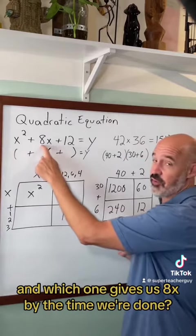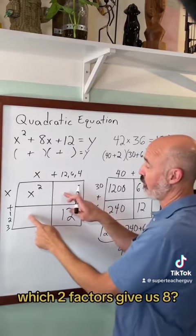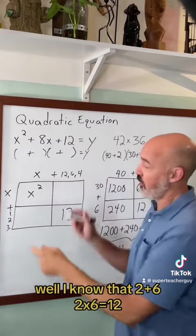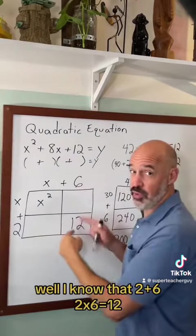And which one gives us 8x by the time we're done? Which two factors give us 8? 1, 12, 2, 6, or 4 and 3? Well I know it's 2 plus 6. 2 times 6 is 12.